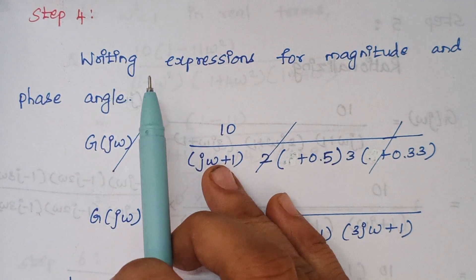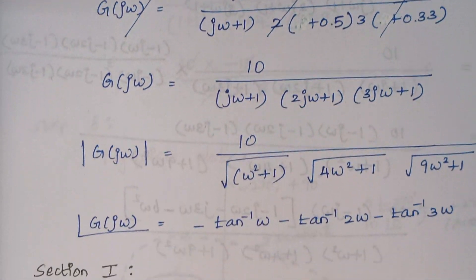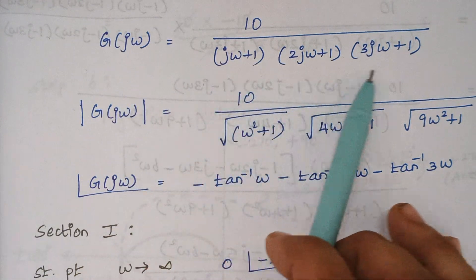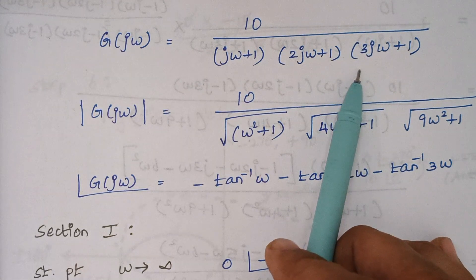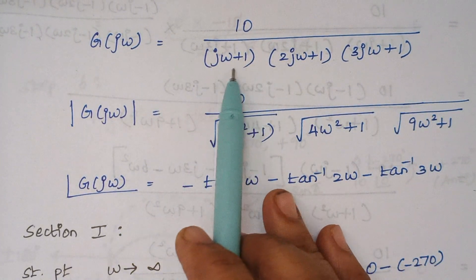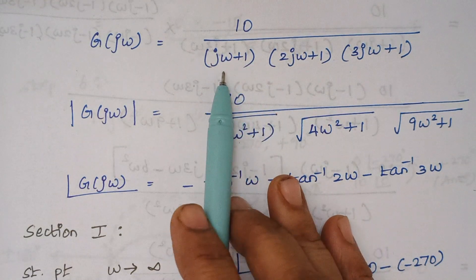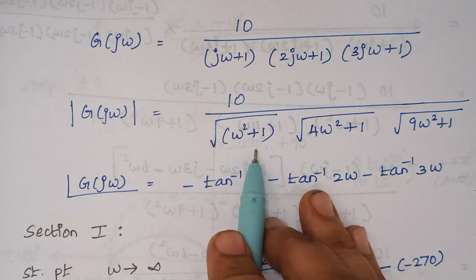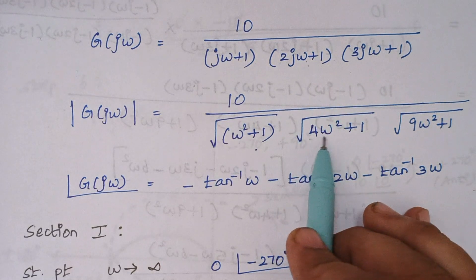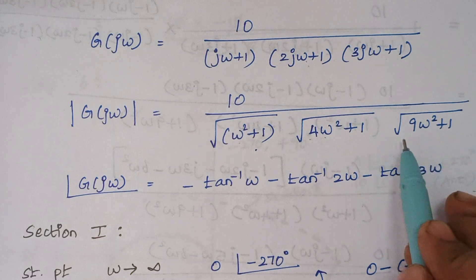Step 4: we are going to write the expression for magnitude and phase angle. We replace S with jω. To find the magnitude, you square all elements and take the square root. For (1+jω), the magnitude is √(ω²+1). For (1+j2ω), it gives √(4ω²+1). For (1+j3ω), it gives √(9ω²+1).